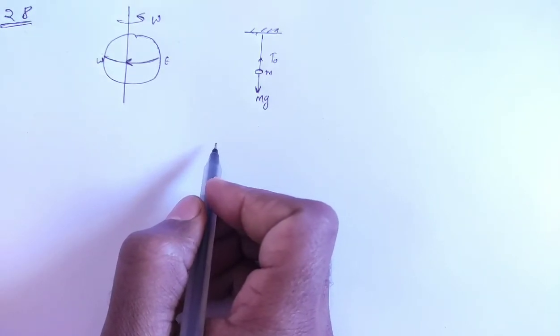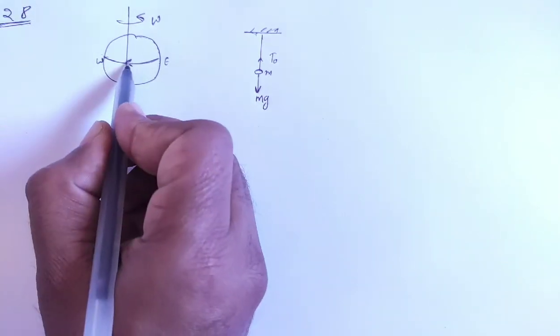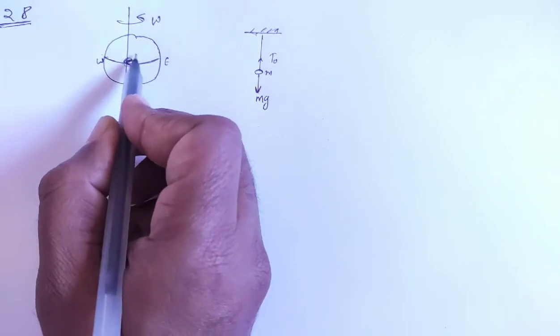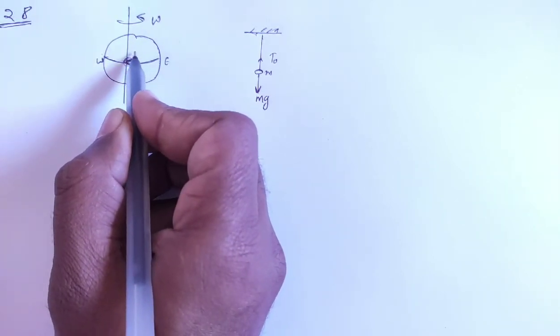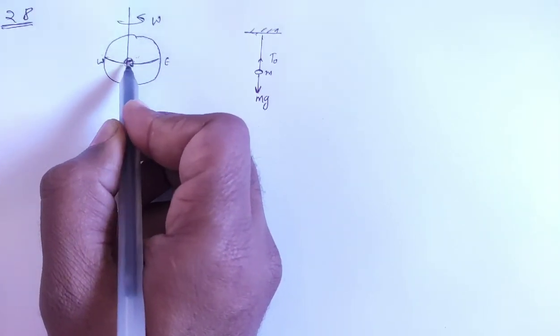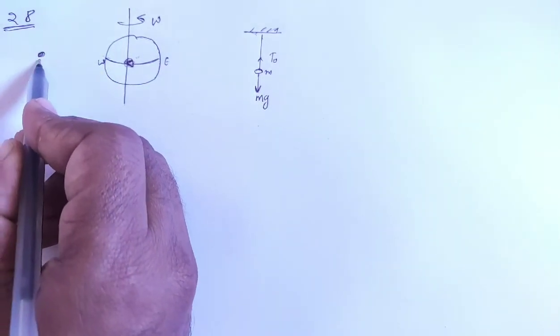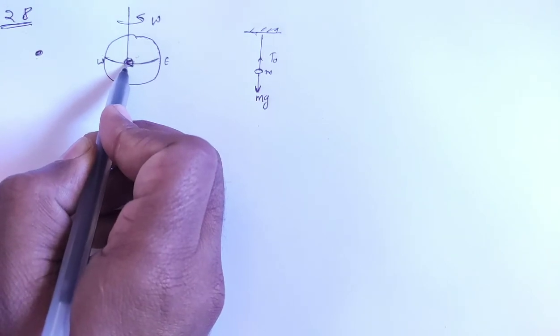First question: find the speed of the ship due to rotation of the earth about its axis. Now the ship is at rest. If the ship is at rest, it's moving with Earth.